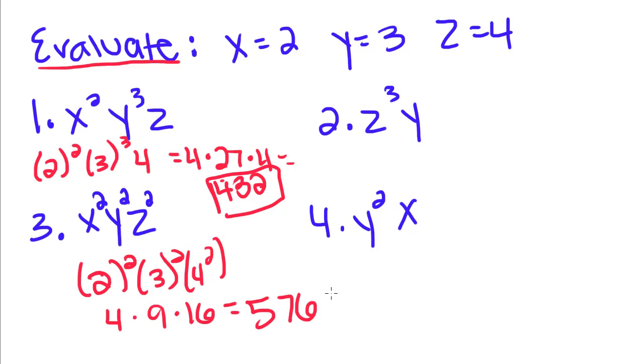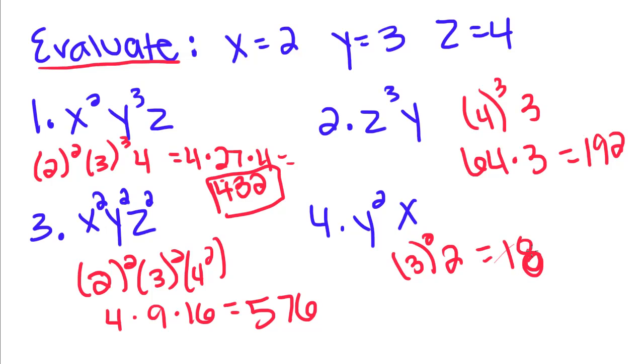So 4 cubed times 3. 4 times 4 is 16, times 4 is 64. 64 times 3 is equal to 192. And then we have 3 squared times 2. Now this one isn't going to be that big. 3 squared is 9, times 2 is 18. So that's all the work we're going to do with exponents today. But make sure you come back and we're going to learn about polynomial expressions.